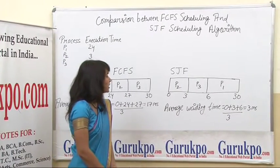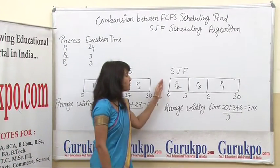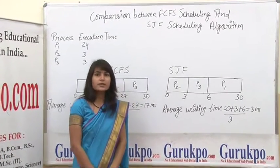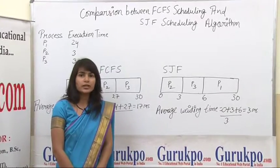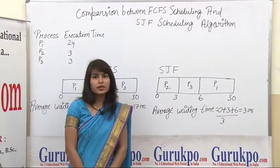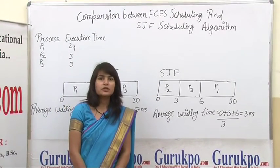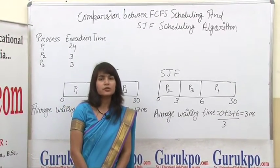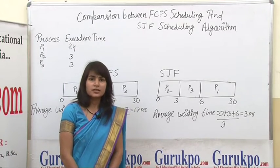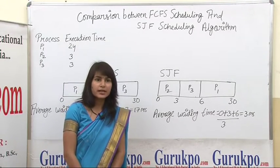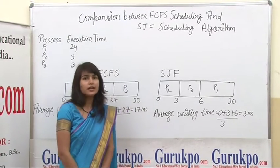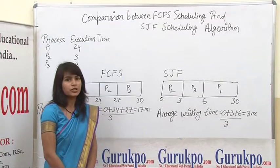Now we discuss the SJF policy — it is called the Shortest Job First policy. In this policy, the process requests the CPU and the scheduler decides which process needs the least execution time, and that process is given the CPU first.